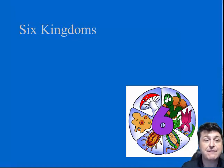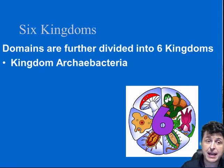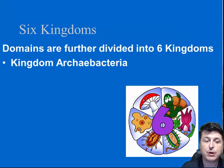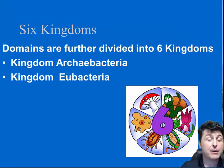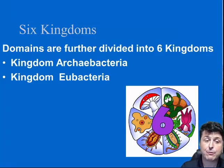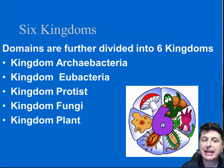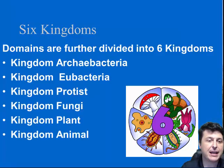The domains are broken down into further kingdoms. Currently, our textbooks identify six kingdoms: kingdom Archaebacteria, kingdom Eubacteria, and then our Eukaryota have the remaining kingdoms — Protists, Fungi, Plants, and Animals.